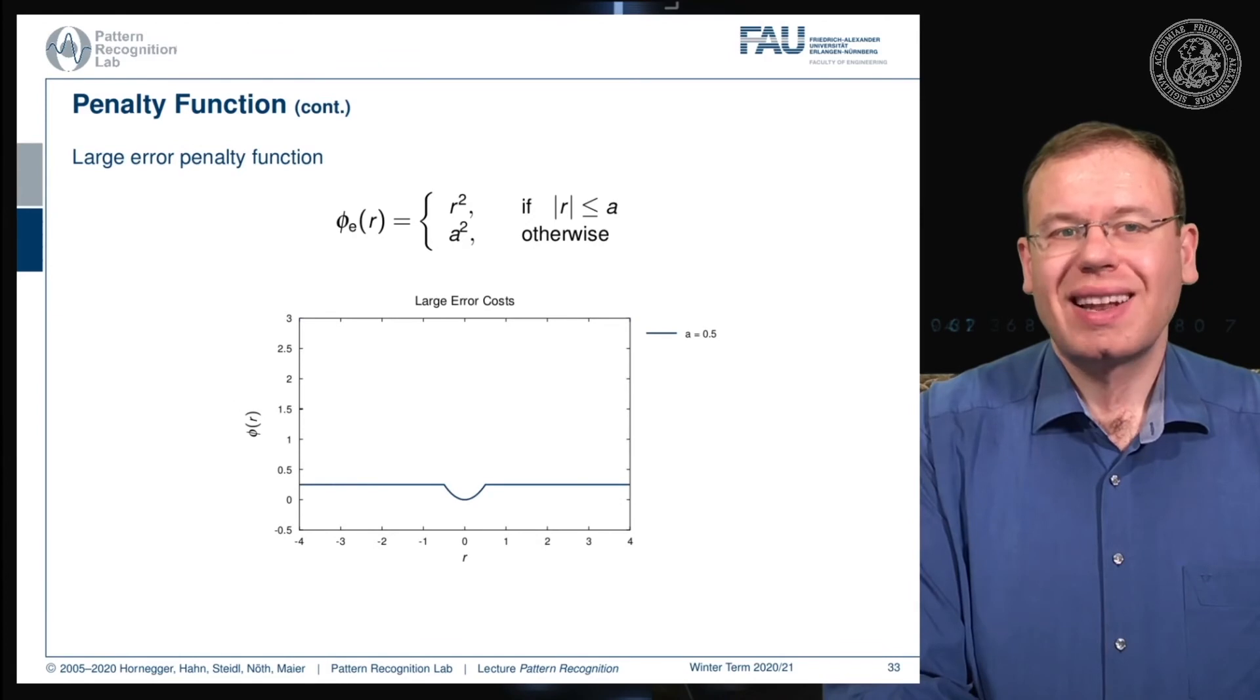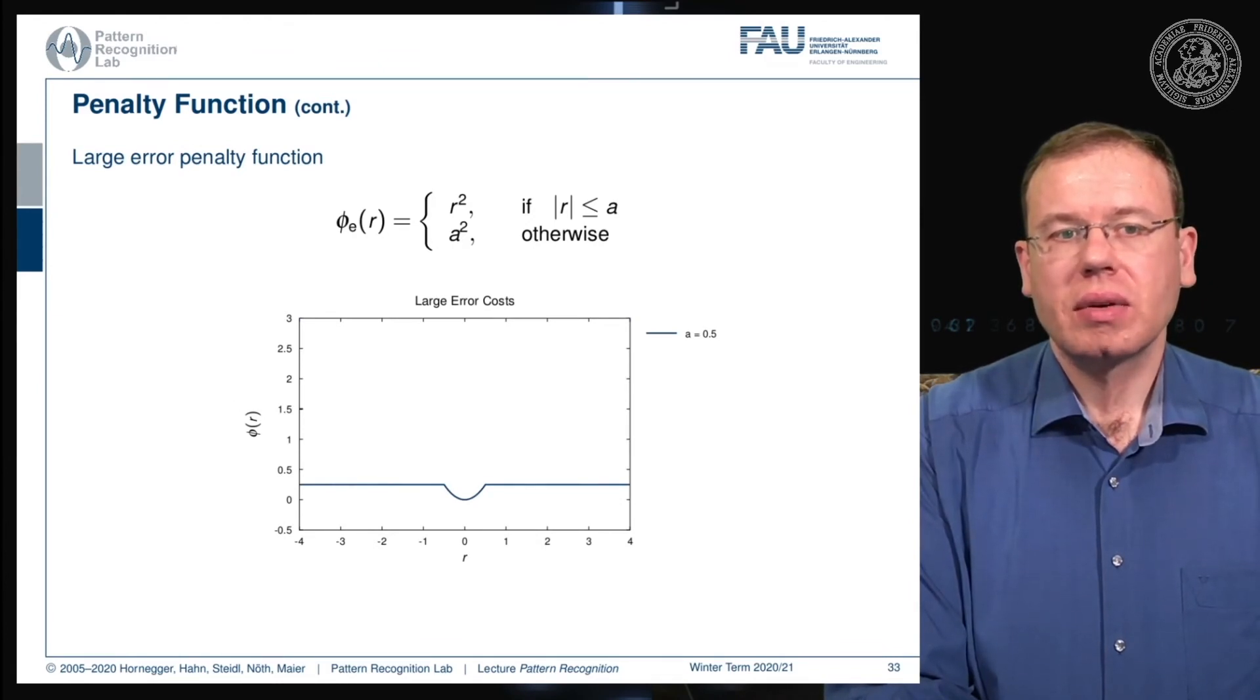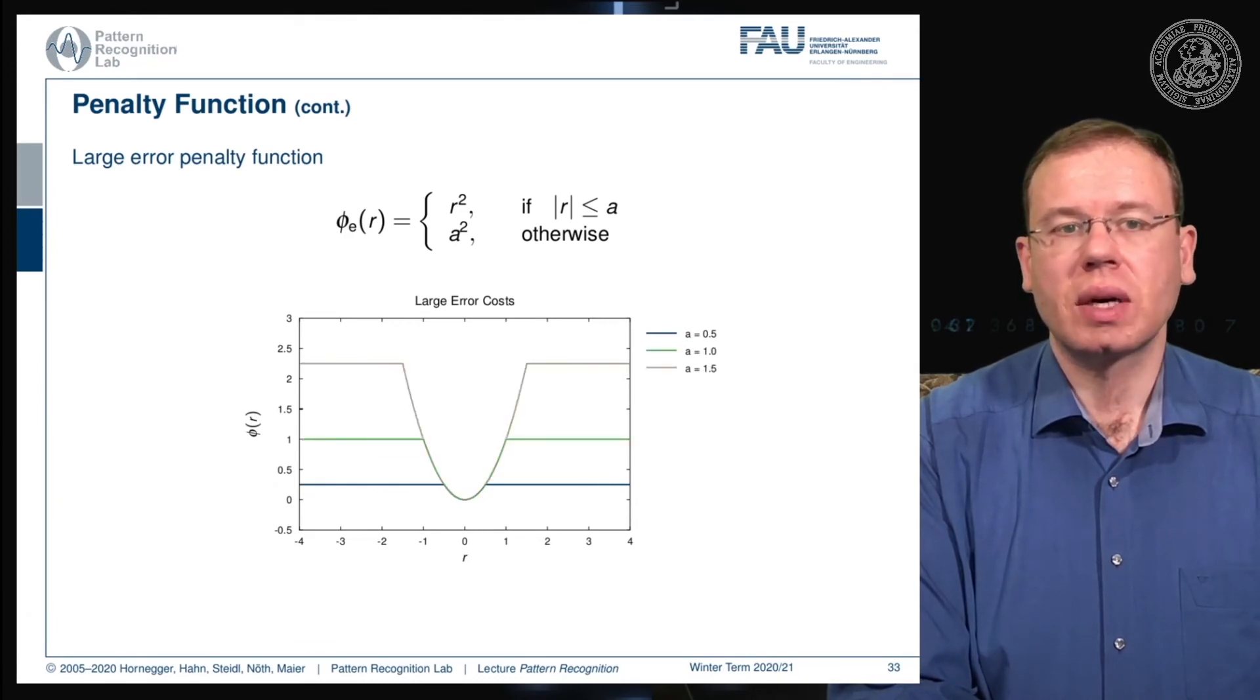You can have the large error penalty function. Here you essentially define an error that is assigned to large errors. There the error or penalty is going to be A squared. As long as you are below A, then you simply set it to the square of the residual. And of course you can vary this one as well. Here you simply say if I do an error it just counts as error, but I don't care how strong the error is.